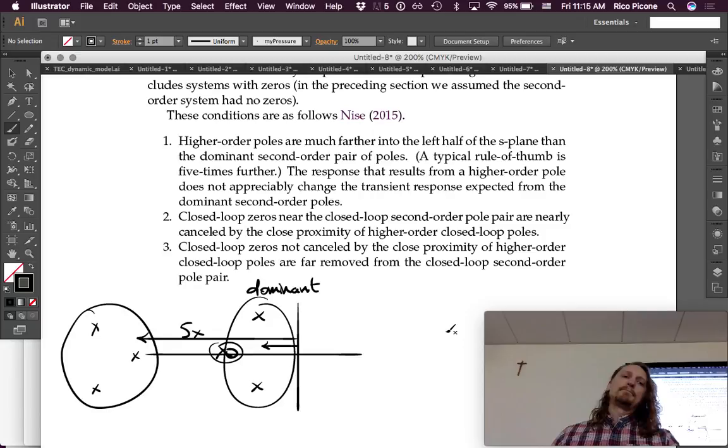The third condition is closed-loop zeros not canceled by the close proximity of higher-order closed-loop poles are far removed from the closed-loop second-order pole pair. So, if we had zeros that are out here, or out here, or whatever, these ones don't have a huge effect either. So, those are our conditions. As long as those things hold our approximations, good.